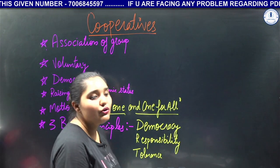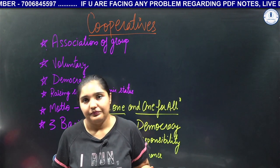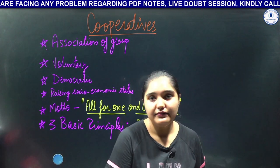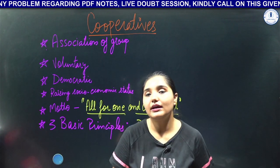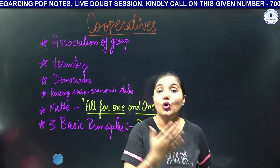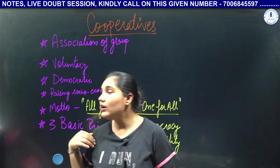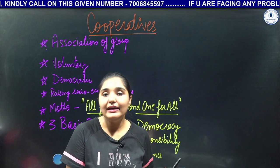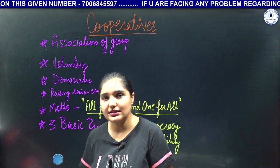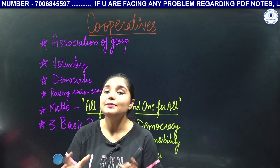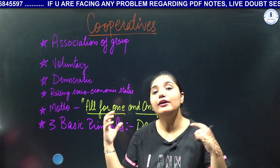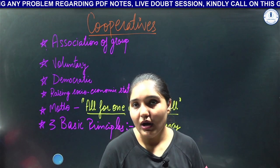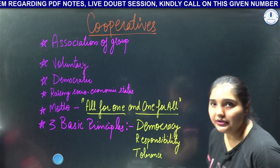Now we start cooperatives. Cooperative, as the word suggests, is made of two words: 'co' and 'operative'. 'Co' means 'together' — co-pilot, co-passenger, co-colleague — 'co' always means together. And 'operate' means to do something, to work, or for some action to happen. So cooperative means working together — some people form a group and work together; that is called a cooperative.